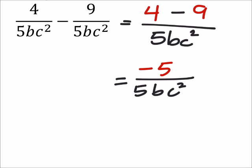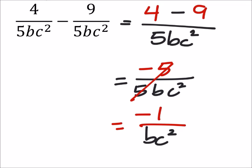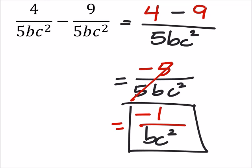Of course, the 5's cancel each other out, which leaves us with a negative 1 over bc squared. And yes, it doesn't really matter where that negative is.